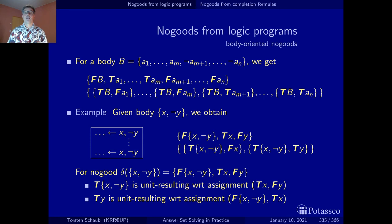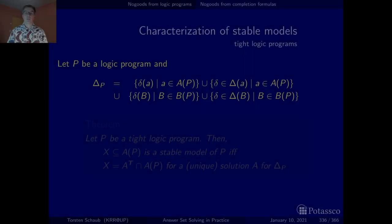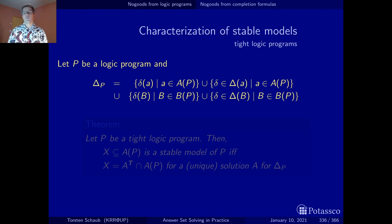Now that we have seen all these no-goods, are we sure that they really capture stable models, or perhaps only a part? We are only looking at completion formulas, so perhaps we are not yet there. We've already seen that if we only take completion formulas, we can only capture supported models, and supported models coincide with stable models only on tight programs — where we have no cycles in the dependency graph.